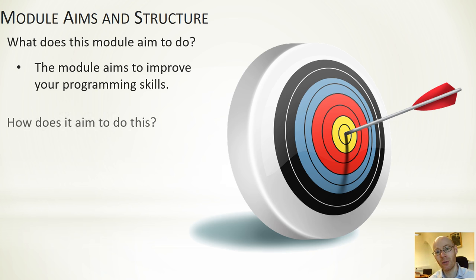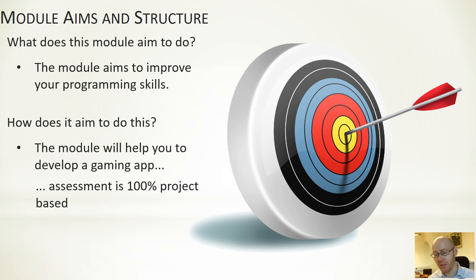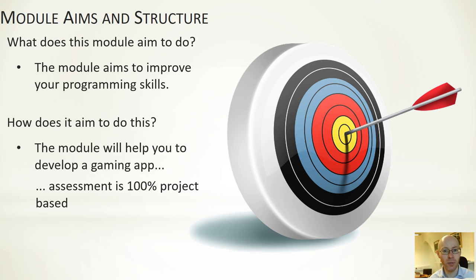How does it aim to go about doing that? Again there's a reasonably straightforward and simple answer. We're going to develop a 2D game running on Android. It'll be part of a large project and the process of actually doing this will be the vehicle, the mechanism that we will use to improve our programming skill. For this module there's no examination at the end, there's no assignments. It is simply based around the project, and the mark you get will depend entirely upon your contribution and the quality of the code that you submit.